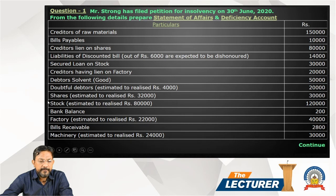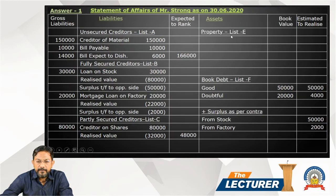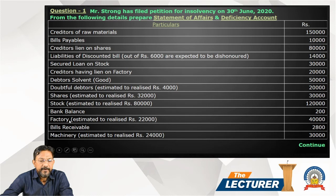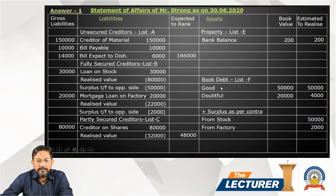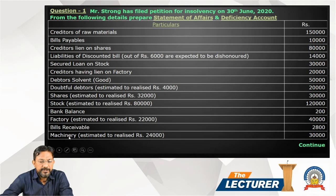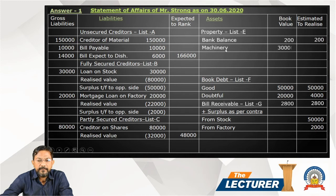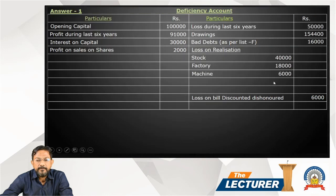Shares and stock are already taken care of. Bank balance is a part of property. Statement of affairs List E — bank balance 200, book value and estimated to realize both 200. After bank balance, factory is already taken care of. Bill receivable 2,800. Then machinery: property 30,000 book value, realizable value 24,000. Statement of affairs List E — machinery 30,000, realizable value 24,000. Difference is 6,000 loss — goes to deficiency accounts right-hand side: 6,000.